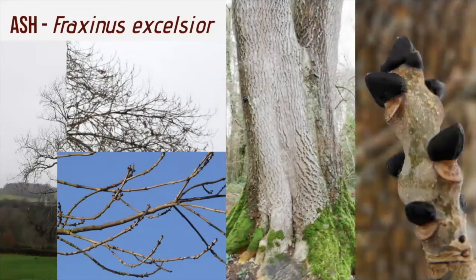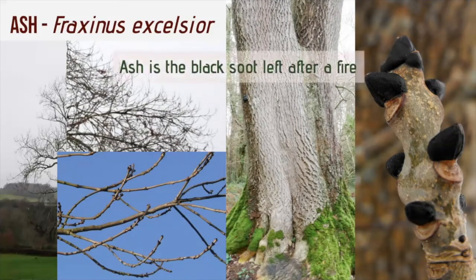The buds on the ash tree are very distinctive — they're black, which makes it a very easy tree to identify in winter. The lateral buds are opposite in pairs. One useful way of remembering the ash tree is that it's the black soot left after a fire — that's the colour of the bud.